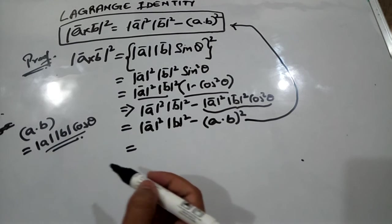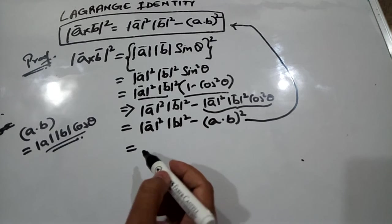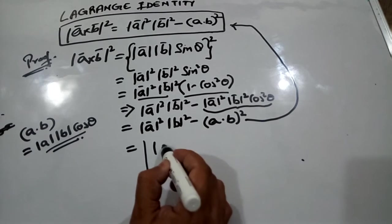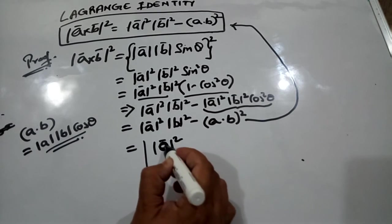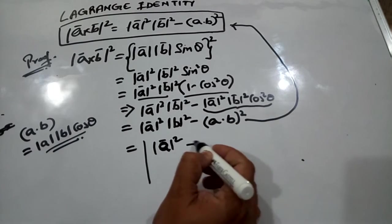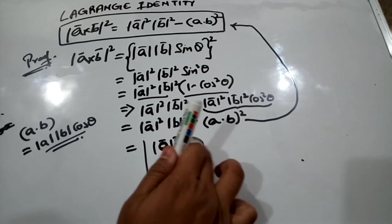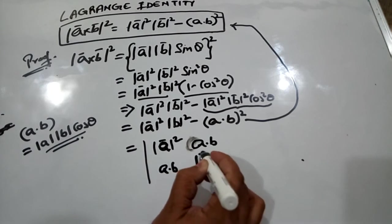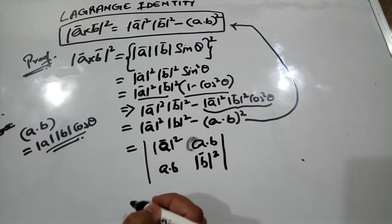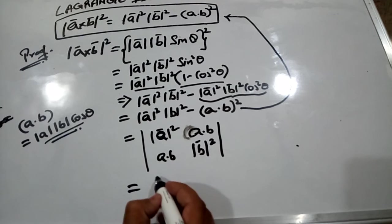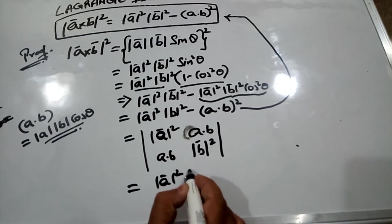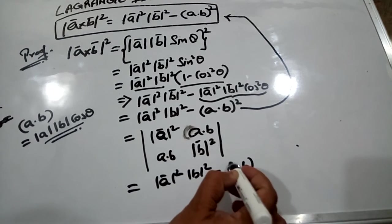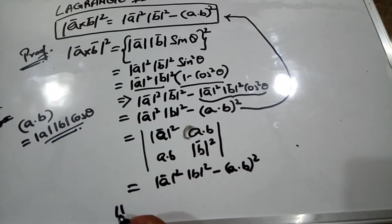Further, if there is any other way to do this identity, it is through determinants. What we can do is we can write mod of a square, a dot b, a dot b, mod of b square. Solving this determinant will give us mod of a square mod of b square minus a dot b whole square. Hence proved.